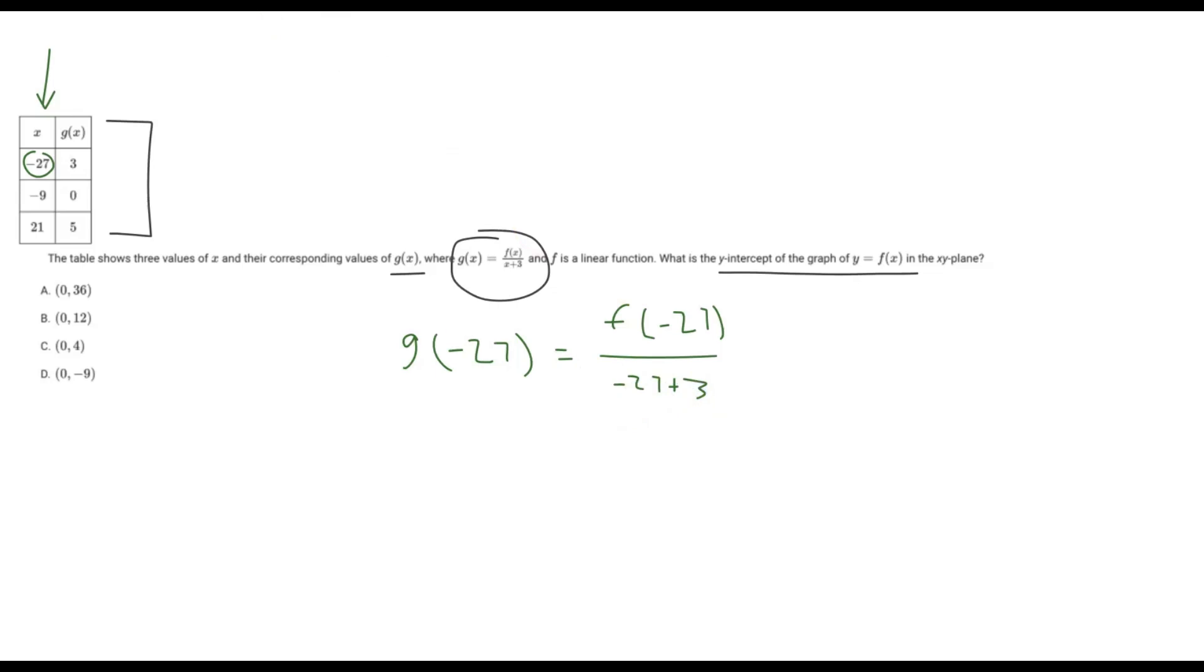Now, here's the thing, because in our table, we get values of g of x. So g of negative 27 can also be rewritten as just 3. It's right there in the table. So 3 equals f of negative 27 over negative 27 plus 3.